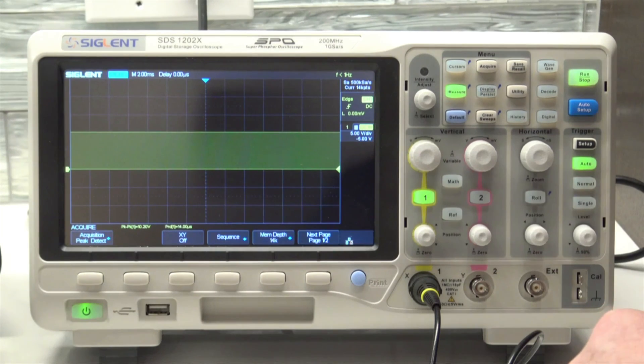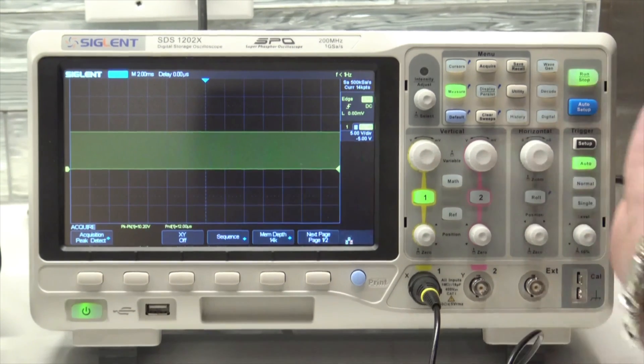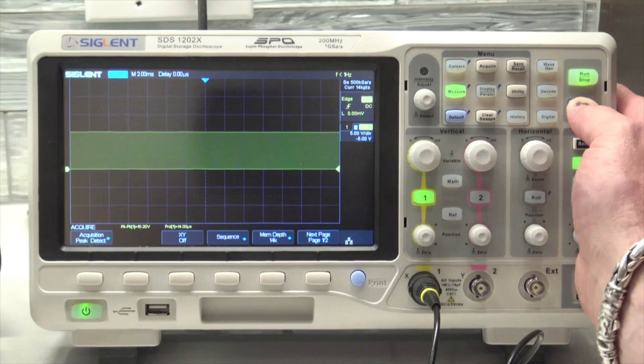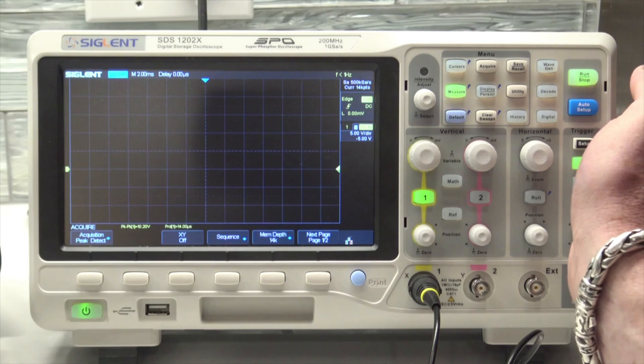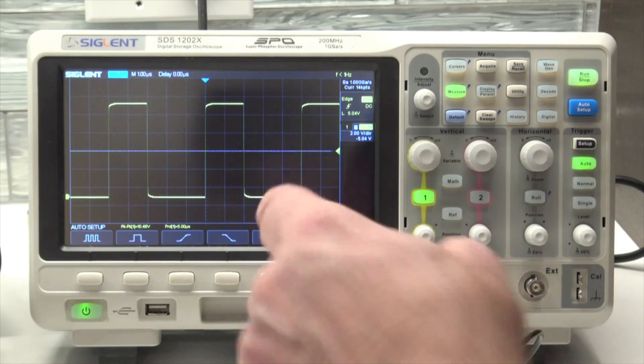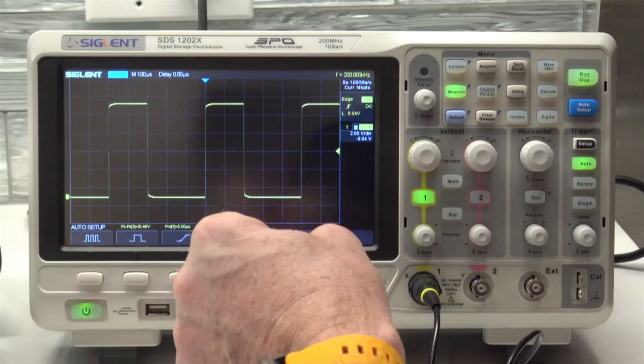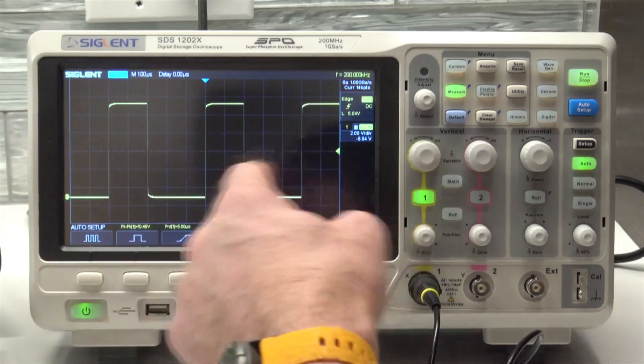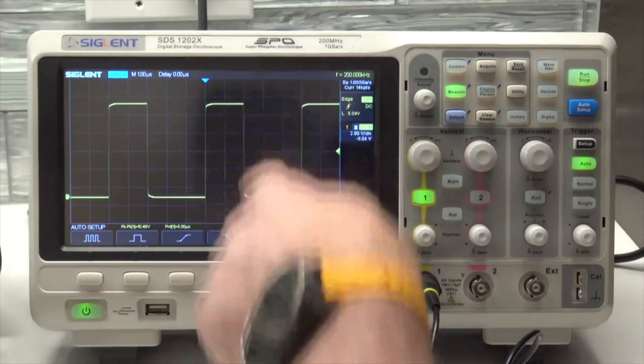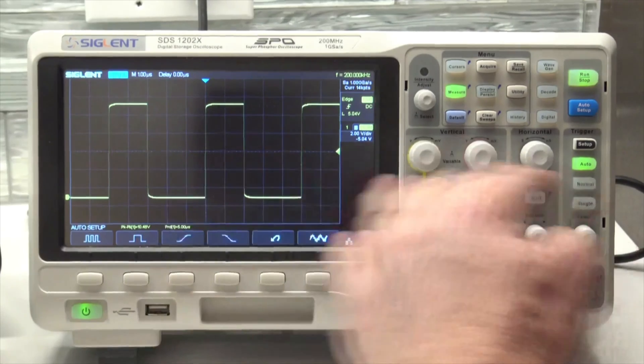I'm going to hit this auto setup to make it quick and easy to capture. I like this feature on this scope because it does a great job at giving you a few cycles and spreading it out on the horizontal and vertical scales to give you a full picture.